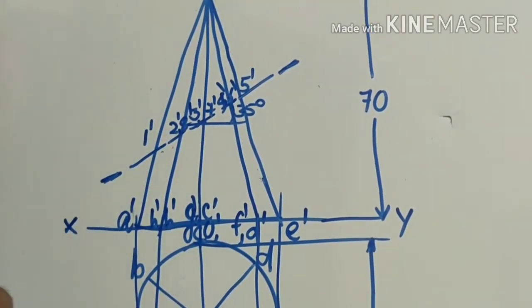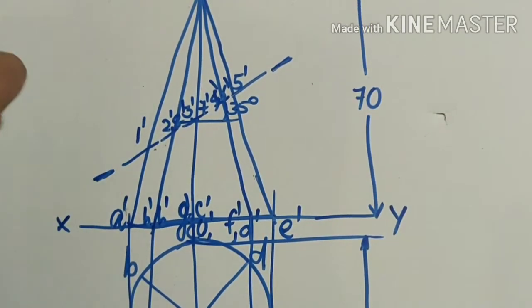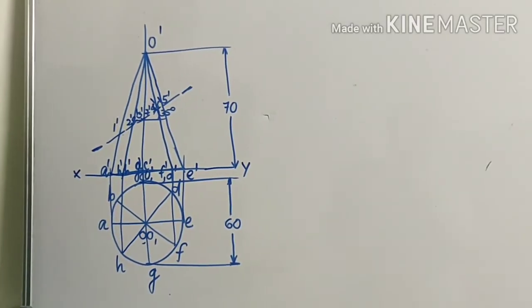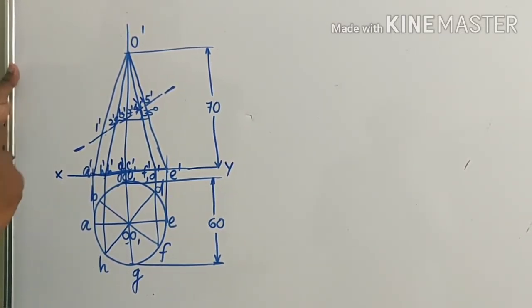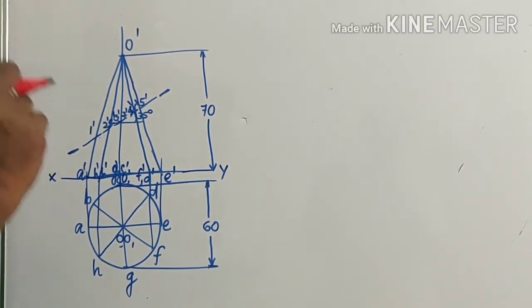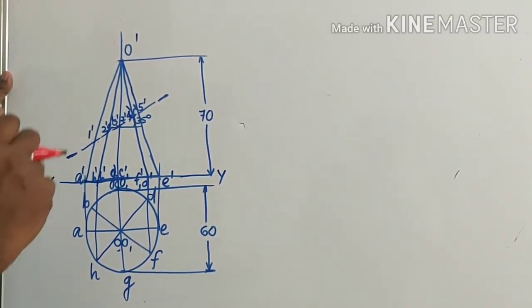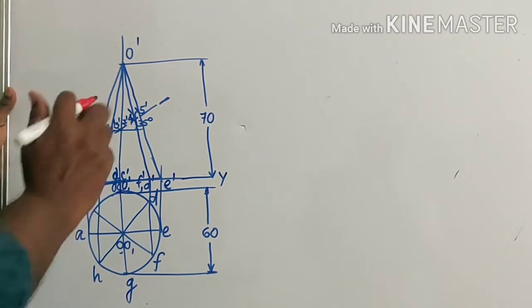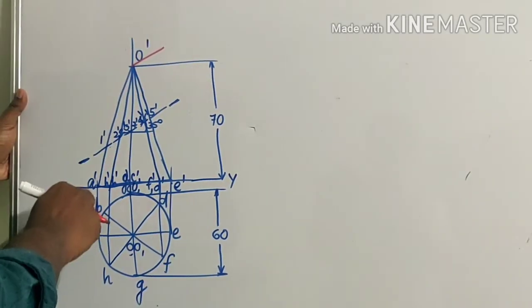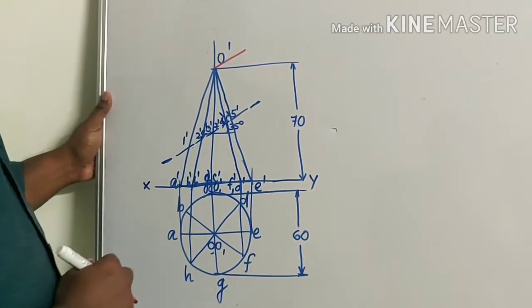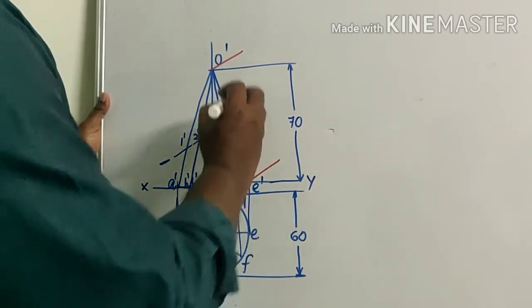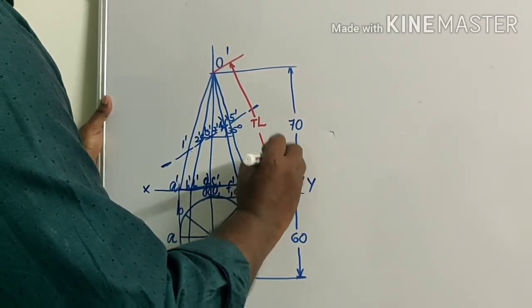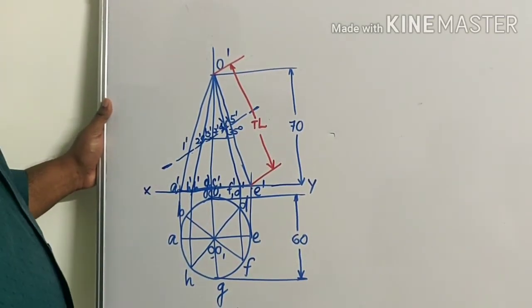The next step is to draw the development of the sectioned solid. First of all, you have to draw the development of the solid itself. For drawing the solid, you have to find out the true length of the generator. Either O' A' or O' E' will be the true length. So I am going to take O' E' as the true length of the generator. O' E' will give you the true length of the generator, which you can measure.